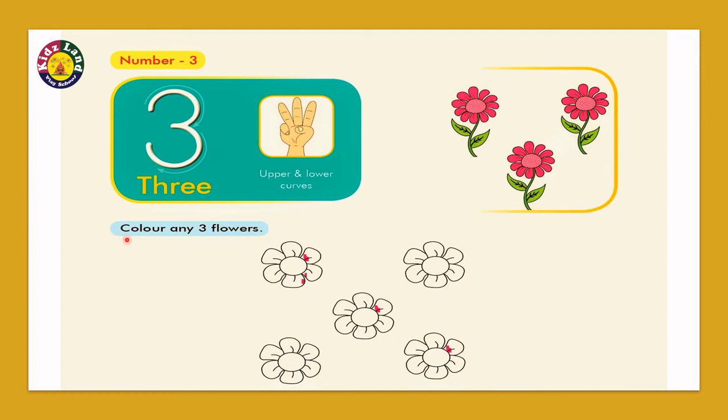Now what does it say? It says color any three flowers. We have to start the coloring. Let's start. Color one flower, color two flower, color three flower. How many flowers did we color? One, two, and three.